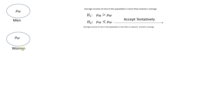Now we will tell our friend: we accept this hypothesis that includes the equality — the average of men is less than or equal to the average of women — tentatively.